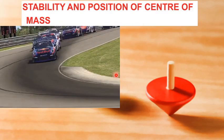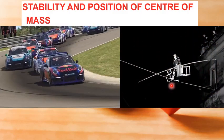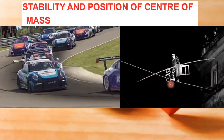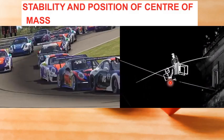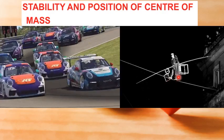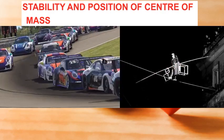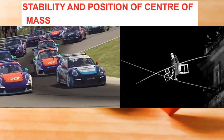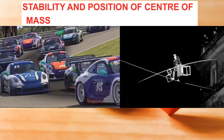Another example: circus artists such as tightrope walkers, as you can see in this figure, use long poles to lower their center of mass. In this way, they are prevented from toppling over.